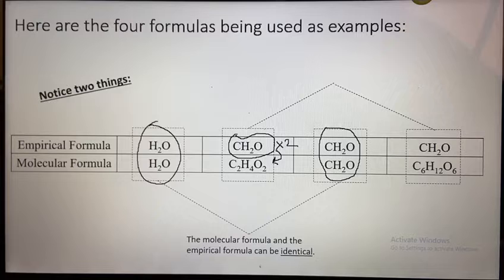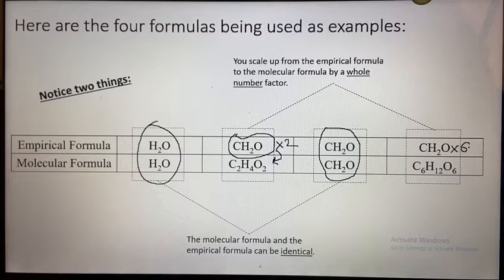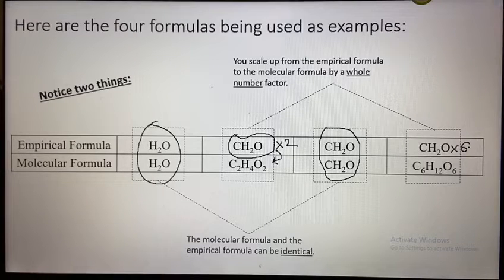Similarly, this formula CH2O—if I multiply it by six, I get C6H12O6, which is the glucose molecule. So if you have the empirical formula and multiply it by a suitable number, you get the molecular formula. You can scale up from the empirical formula to the molecular formula by a whole number factor.